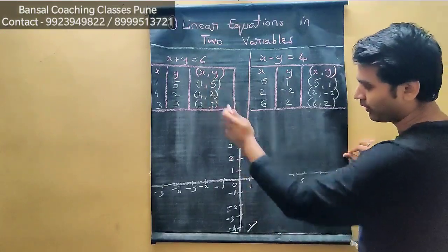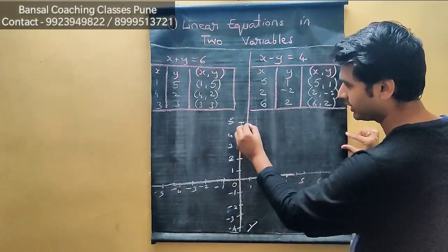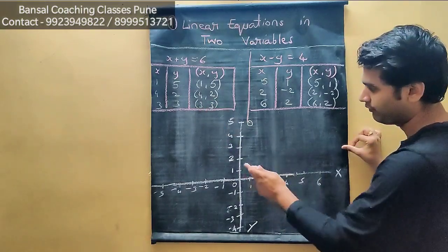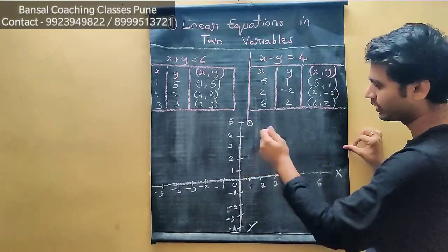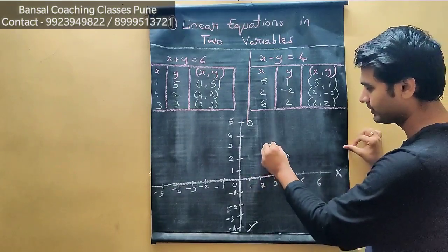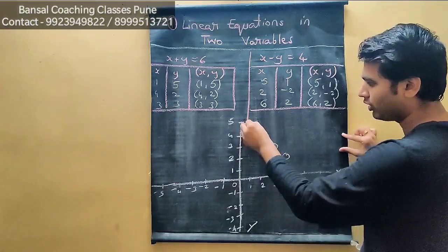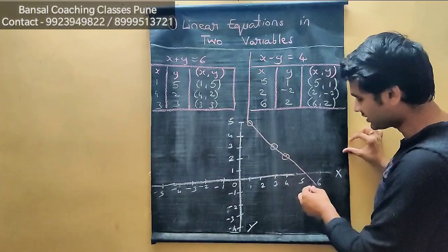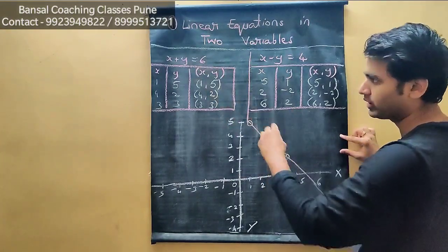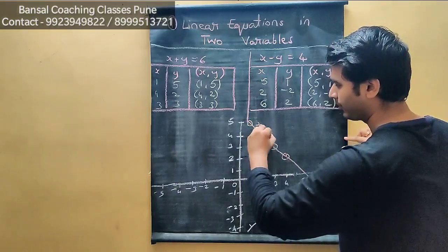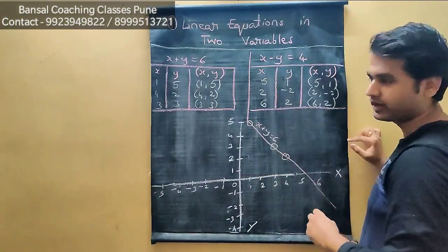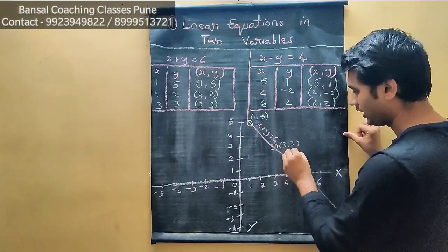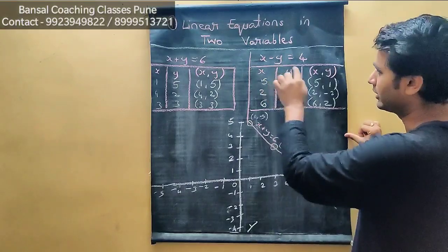Now plotting equation 1. First point is (1, 5): x is 1, y is 5. Second point is (4, 2): x is 4, y is 2. Third point is (3, 3): x is 3, y is 3. Now we draw a straight line through all 3 points — they will be collinear, meaning all 3 points lie on the same line. This straight line represents equation 1: x plus y equals 6.